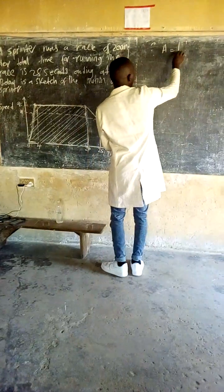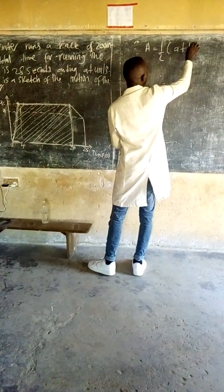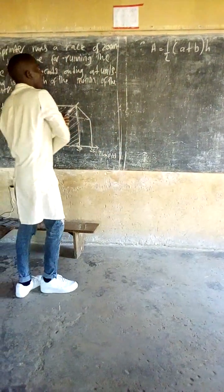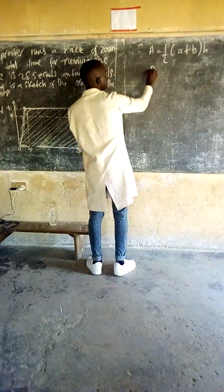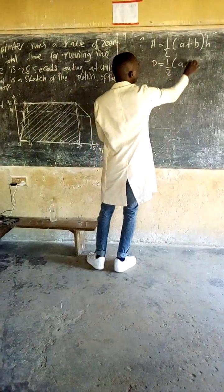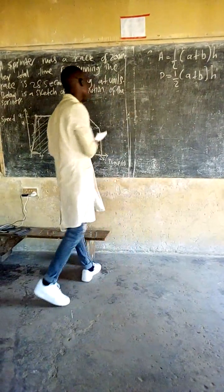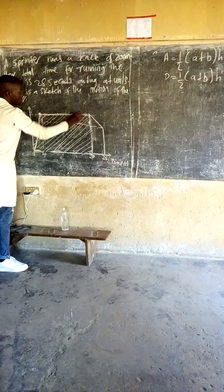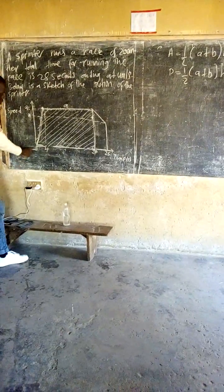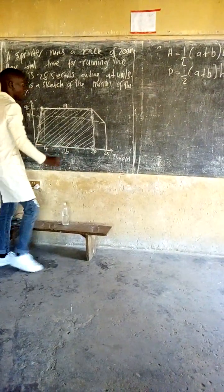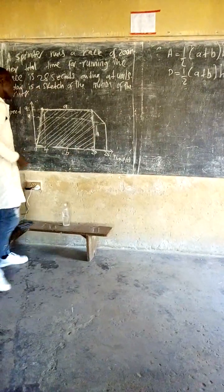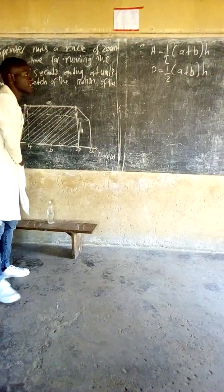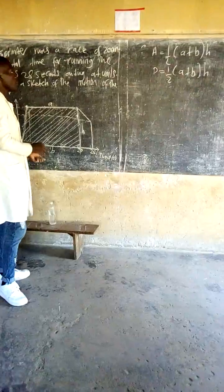Area equals one-half times (A plus B) times height. Since we want distance, not area, we replace area with D. So D equals one-half times (A plus B) times H. Now let's identify our A, B, and height. Our A is from 4 to 20 seconds. Our B is from 0 to 20 seconds. Our height is the vertical dimension of the trapezium. After identifying A, B, and H, we replace those values.